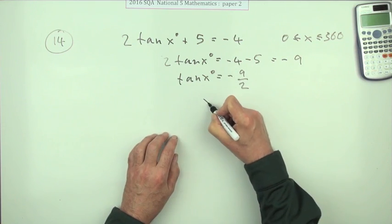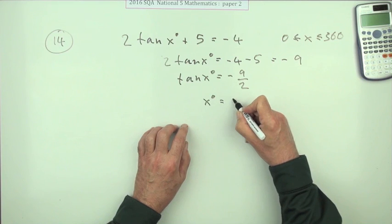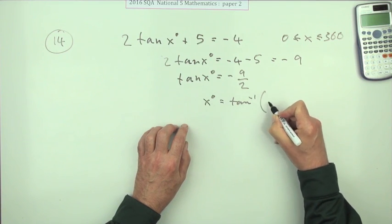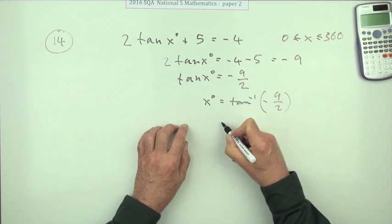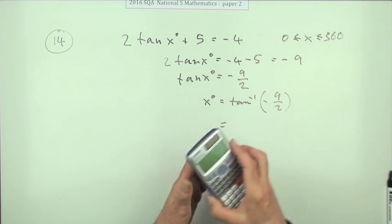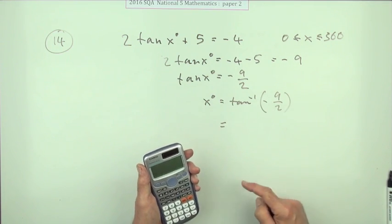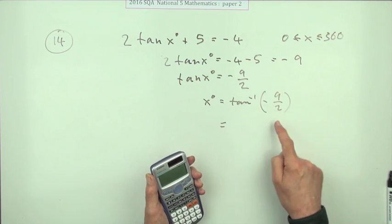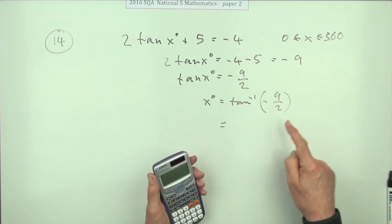Finally get rid of tan - inverse tan of negative 9 upon 2. So you've got everything there. The first part is find the inverse tan just of the numerical part to get the angle.